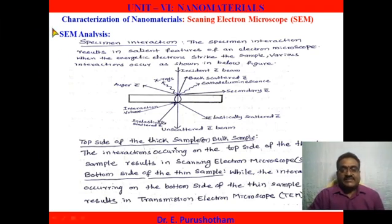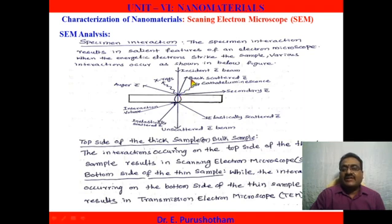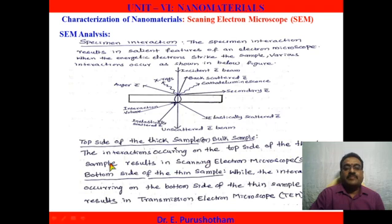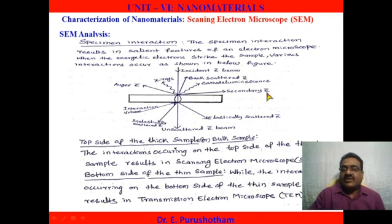In scanning electron microscope analysis, the incident monochromatic electron beam is incident on the sample. This electron beam is scattered back and also transmitted through the sample. The top surface interactions — including secondary electrons, Auger electrons, and X-rays — are explained using the scanning electron microscope, while bottom values are explained using the transmission electron microscope. In specimen interaction, there are four main types: backscattered electrons, secondary electrons, Auger electrons, and X-rays.